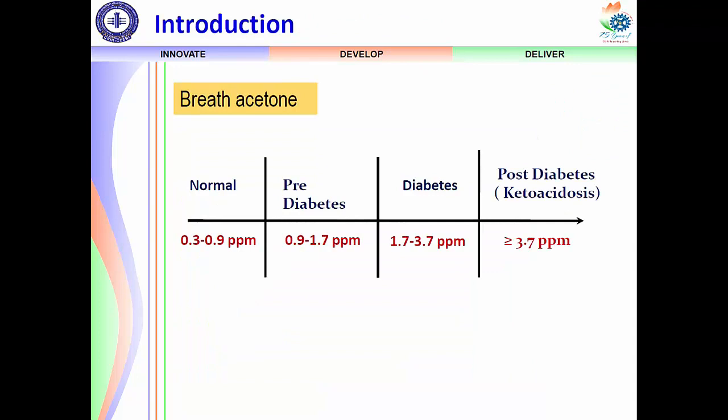This talk is focused on diabetes detection. Acetone is the preferred biomarker for diabetes; there are other biomarkers as well, but acetone is the dominant one that can be quantified to determine diabetes level. The acetone concentration in breath in the range of 0.3 to 0.9 ppm is considered a healthy person.